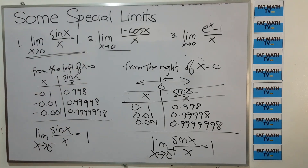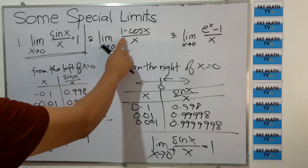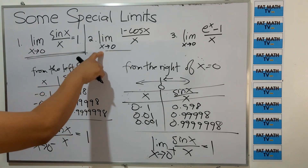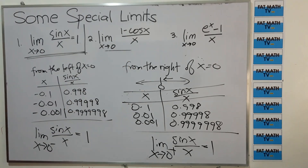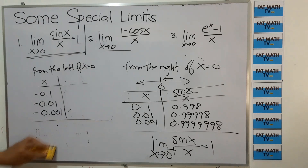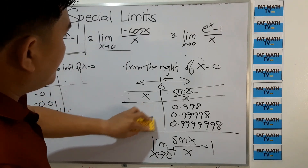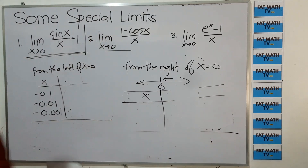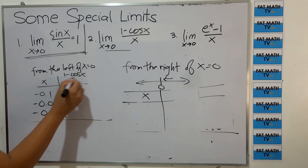That's our first special limit: the limit of sin x over x as x approaches 0 is 1. Now we will investigate 1 minus cosine x over x.